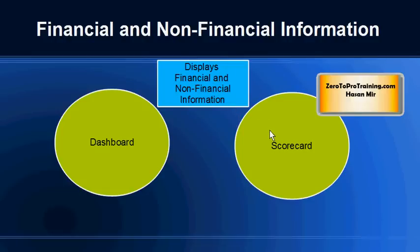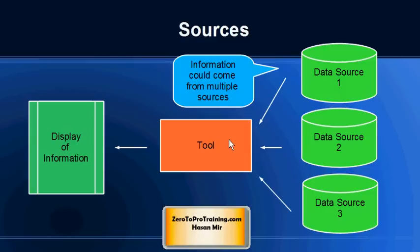The output may include both financial and non-financial information. Financial information would include, for example, budgets and actual balances in different journal ledger accounts. Non-financial information might include, for example, head counts in different departments. The information in dashboards and scorecards could come from multiple sources, including online transaction processing databases and also data warehouses.